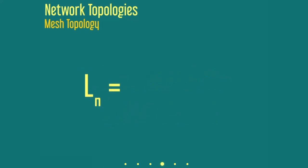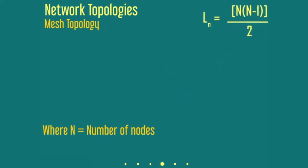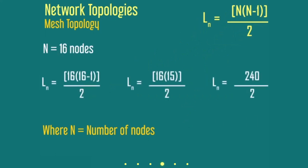In a mesh network, we use this formula to determine how many links are required for the number of nodes we're using. For example, if we're using the mesh network to join 16 nodes in a small office, the formula would look like this. We would need 120 links to connect every node in this office.